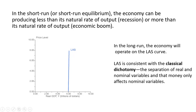In the short run, the economy can be producing less than its natural rate of output — which would be a recession — or more than its natural rate of output, an economic boom. In the long run, however, the economy will operate somewhere along the long-run aggregate supply curve; that's where equilibrium will be. The long-run aggregate supply curve is consistent with the classical dichotomy — the separation of real and nominal variables — and the idea that money only affects nominal variables, not real variables, in the long run.